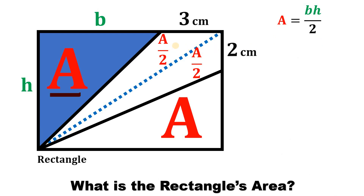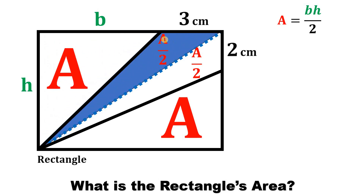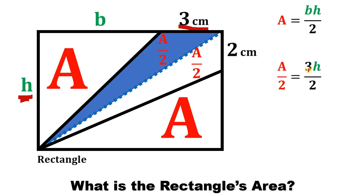Now, how about the area of this triangle? We know the area, which is A over two. We know the base, which is three centimeters. We know the height, represented by H. So A over two equals three times H divided by two, or base times height divided by two. If we multiply both sides by two, we get that A equals three times H.